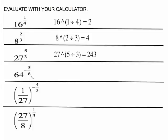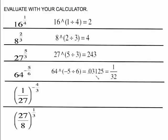Even with a negative exponent, put the whole thing inside parentheses: 64 caret (negative 5 divided by 6). It gives you a decimal. Most scientific calculators have a way to switch back to fractions — on a graphing calculator, go under Math and your first option converts it back to a fraction. For other calculators, you'll have to figure out what works for yours.